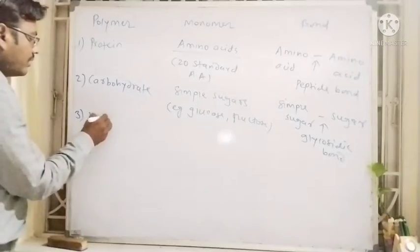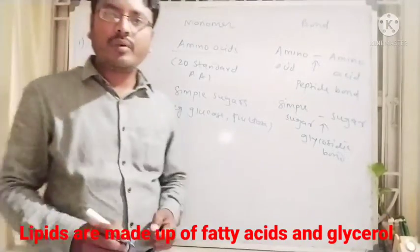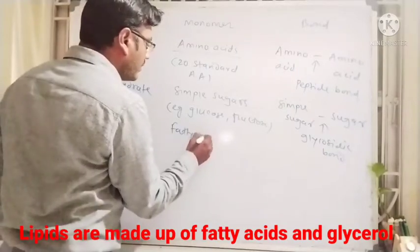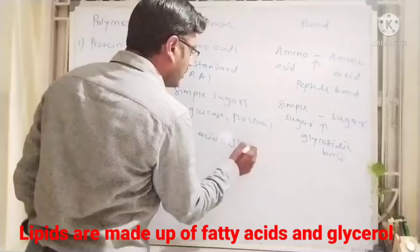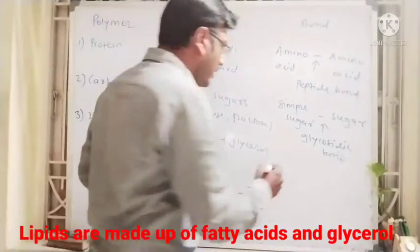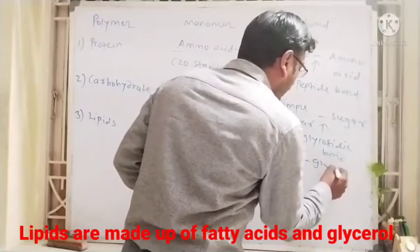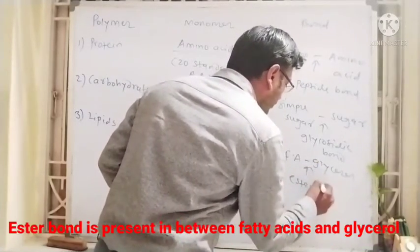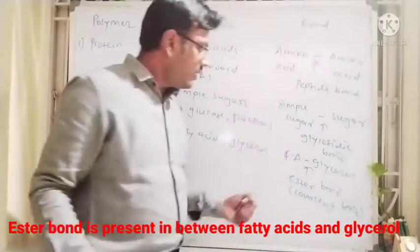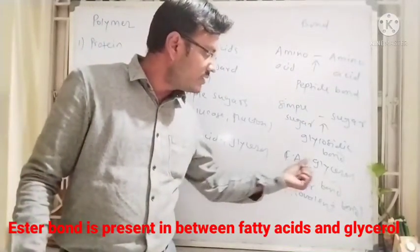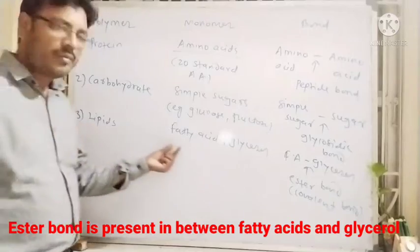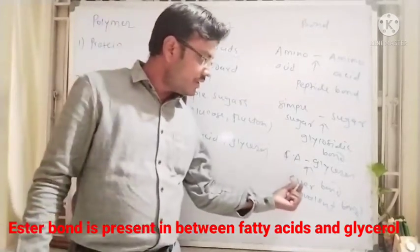Third, we can write lipids. Lipids are made up of fatty acids and glycerol. The bond present between fatty acid and glycerol is the ester bond, which is a type of covalent bond. So lipids are formed from fatty acids and glycerol, joined by an ester bond.